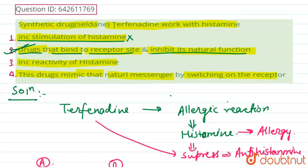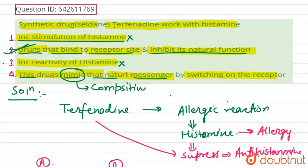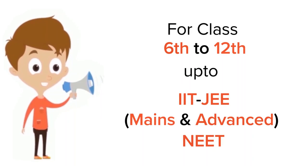The third option — increases the reactivity of histamine — is incorrect; terfenadine suppresses reactivity, not increases it. The fourth option — the drug mimics the natural messenger — is also incorrect. Here, no mimicry takes place; instead, competitive receptor action occurs. Terfenadine competitively acts on the organ where allergy occurs and suppresses it. Therefore, the second option is the correct answer.